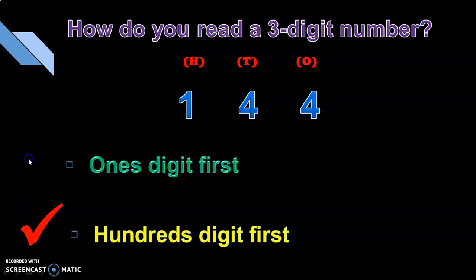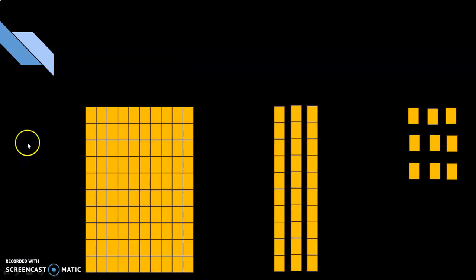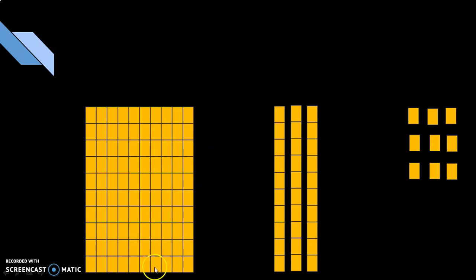Let us move on to the next question. You could give blocks representing numbers and ask the children to find out the number and write the number name. Here, what do we have? We have 10 tens — counting 1 through 10. What does it make? 10 tens make 100.